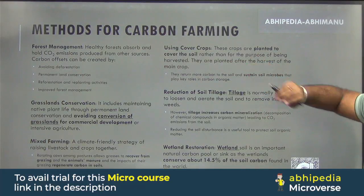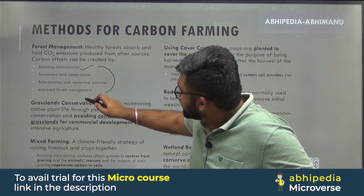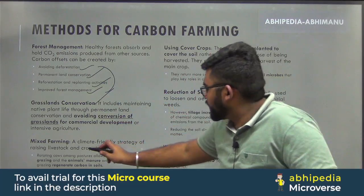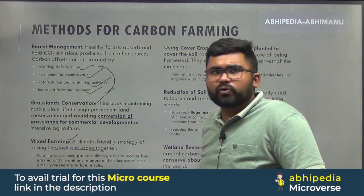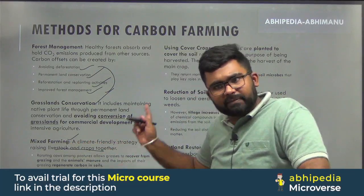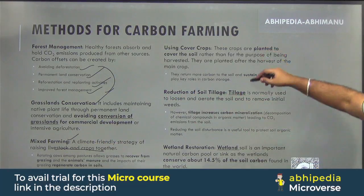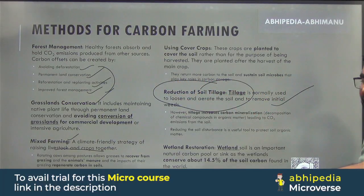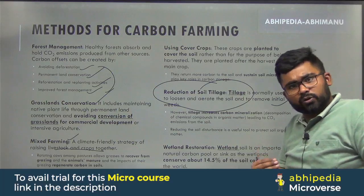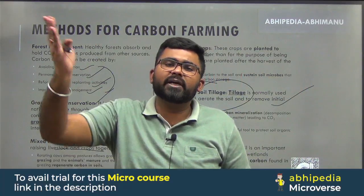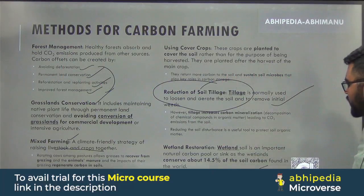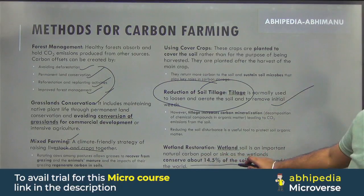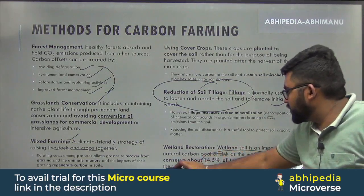The methods of carbon farming include: forest management, which involves avoiding deforestation, reforestation, improved forest management, and permanent land conservation. Mixed farming, where you raise livestock and crops together, is also a carbon farming method. Reducing soil tillage helps with carbon sequestration by preventing trapped carbon dioxide in the soil from being released. Finally, wetland restoration is important — wetland soil is a natural carbon pool or sink, as wetlands conserve about 14.5% of the soil carbon found in the world.